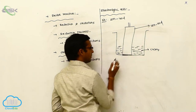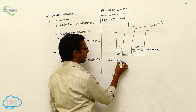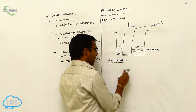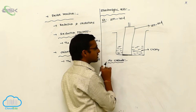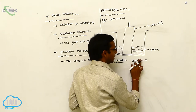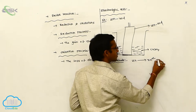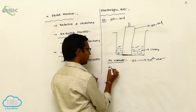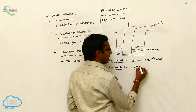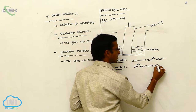In the electrolysis process at cathode, the reduction process takes place. Zinc is donating two electrons: Zn gives Zn²⁺ plus two electrons at the anode. At cathode, copper is abstracting two electrons — Cu²⁺ abstracts two electrons and is converted to Cu.